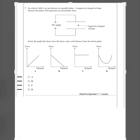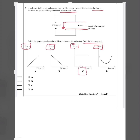Question seven: an electric field is set up between two parallel plates. A negatively charged oil drop between the plates experiences an electrostatic force. The graph shows how this force varies with distance from the bottom plate. The magnitude of the force is constant regardless of position between the plates — this is a common question type. Since the force does not vary with distance, the answer is C.